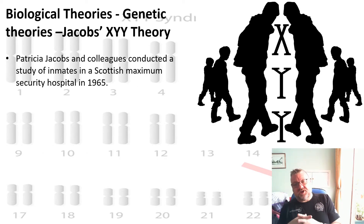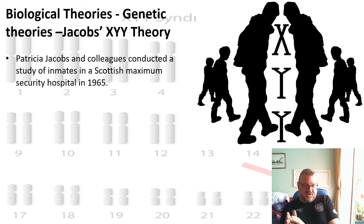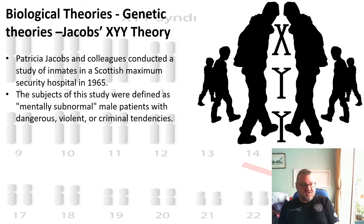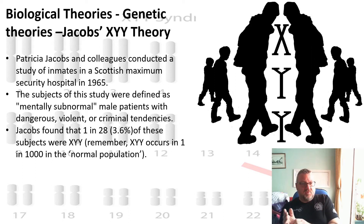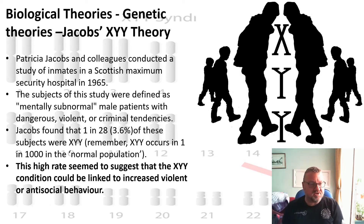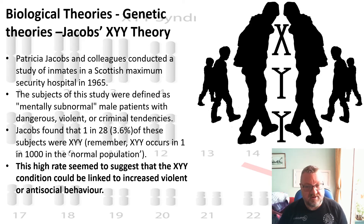Jacobs and her colleagues conducted a study of inmates in a Scottish maximum security hospital in 1965. The subjects were defined as mentally subnormal — male patients who were dangerous, violent, or had criminal tendencies. Jacobs et al. found that 1 in 28, about 3.6%, of these subjects were XYY. Since XYY occurs in only 1 in 1,000 in the normal population, this represents a major statistical difference, suggesting that XYY could be linked to increased violent or antisocial behaviour.